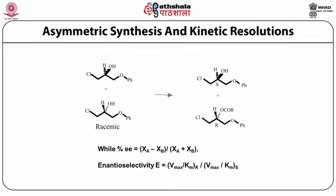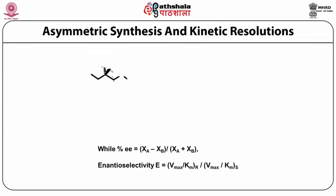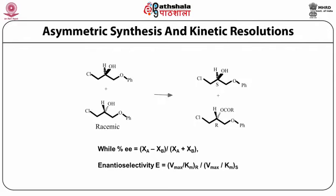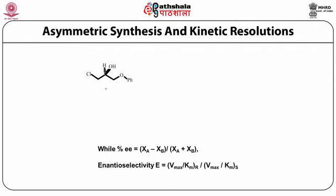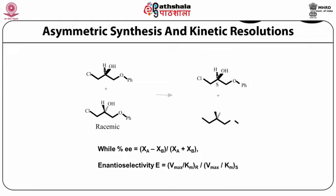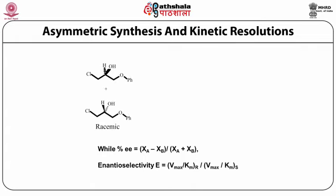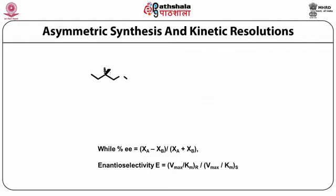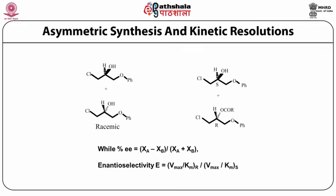The ratio of specificity constants of the enzyme for the two enantiomers is a more important parameter in a kinetic resolution experiment, denoted by capital E. An E value of 1 represents a reaction where no enantioselectivity was obtained. In actual practice, E larger than 20 is considered a fairly selective reaction, while E more than 100 is considered highly enantioselective. In kinetic resolution, the maximum yield of the desired enantiomer is 50%, and the percentage enantiomeric excess varies with time and percentage conversion.